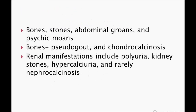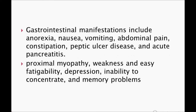The classic mnemonic for manifestations is: bones, stones, abdominal groans, and psychic moans. Bone manifestations include osteitis fibrosa cystica, chondrocalcinosis. Renal manifestations include polyuria, kidney stones, hypercalciuria, and nephrocalcinosis. Gastrointestinal manifestations include anorexia, nausea, vomiting, abdominal pain, constipation, peptic ulcer disease, and acute pancreatitis. Neuropsychiatric manifestations include proximal myopathy, weakness, fatigue, depression, inability to concentrate, and memory problems.